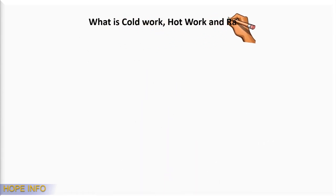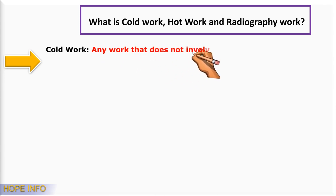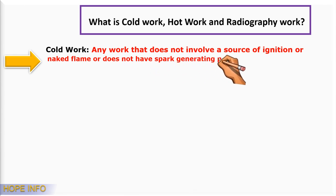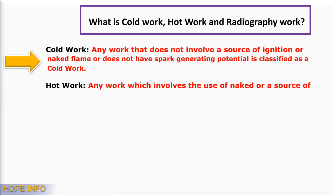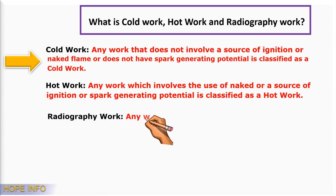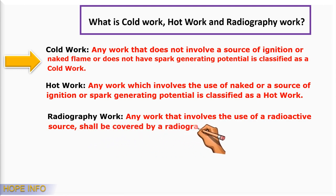What is the cold work, hot work, and radiography work permit? Cold work permit: any work that does not involve a source of ignition, naked flame, or spark-generating potential is classified as a cold work permit. Hot work permit: any work which involves the use of naked flame, a source of ignition, or spark-generating potential is classified as a hot work permit. Radiography work permit: any work that involves the use of a radioactive source shall be covered by a radiography work permit.